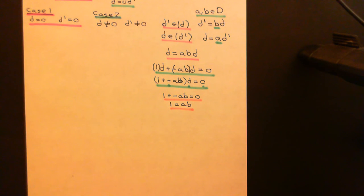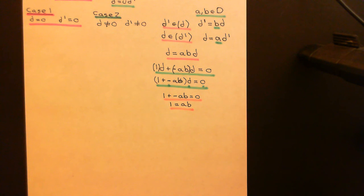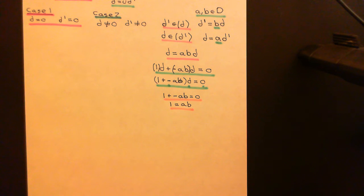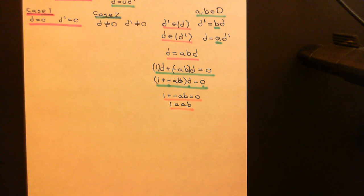So I've successfully shown that element A has a multiplicative inverse, meaning it was a unit, and I can write D equals a unit times D'. So if you're working in an integral domain, the only way two elements can have the exact same principal ideal is if they're related to each other by a unit — one is a unit times the other. This means that if you're working in an integral domain and you've found a greatest common divisor D of elements A and B, to find all other greatest common divisors, just multiply D by all the units in the ring. Those elements will be greatest common divisors and they'll be the only other ones.